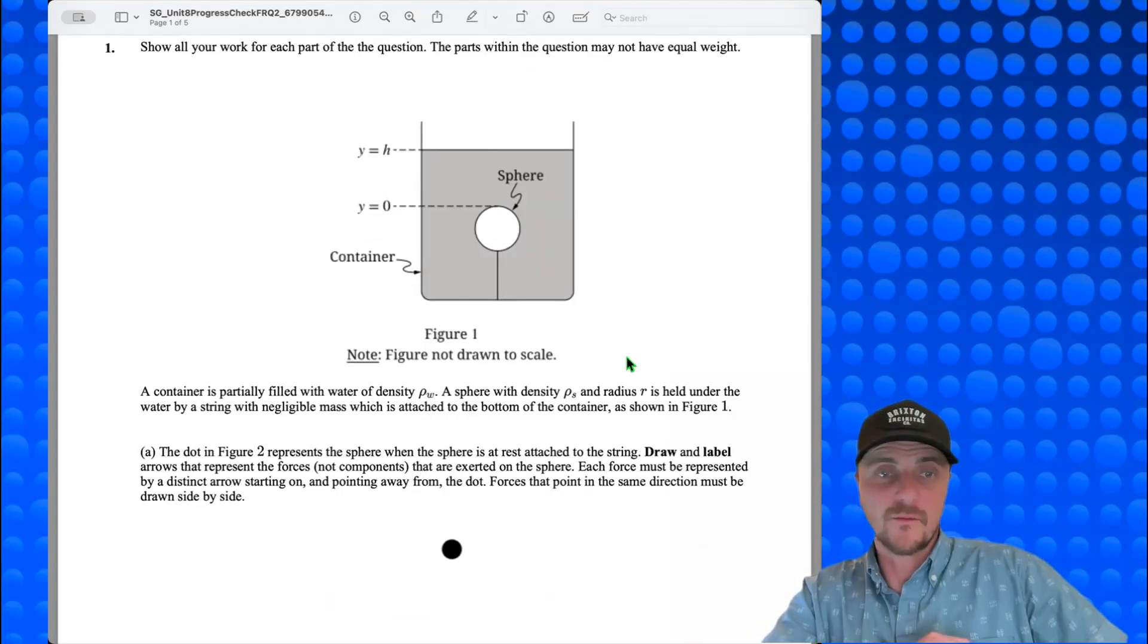A container is filled with water of density rho w. A sphere with density rho s and radius r is held under the water by a string with negligible mass, which is attached to the bottom of the container as shown in Figure 1.